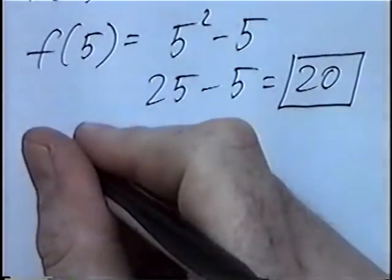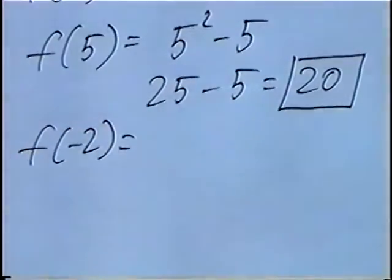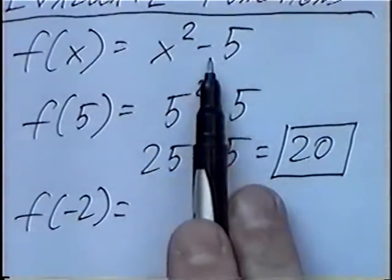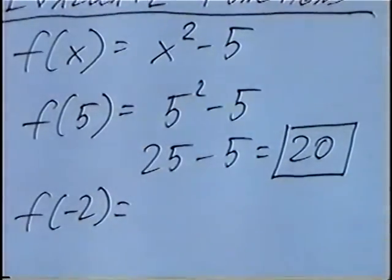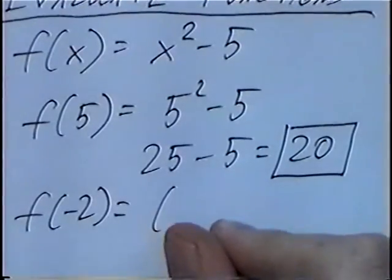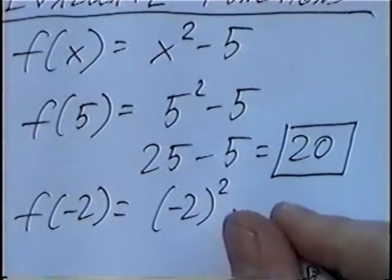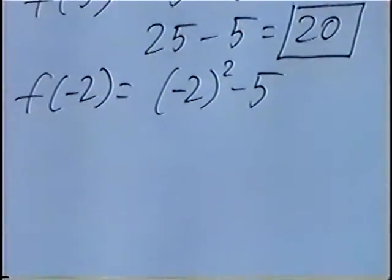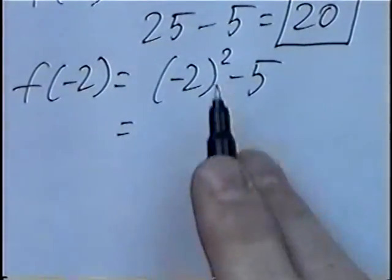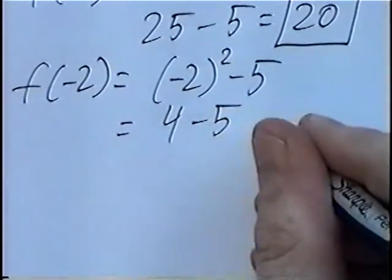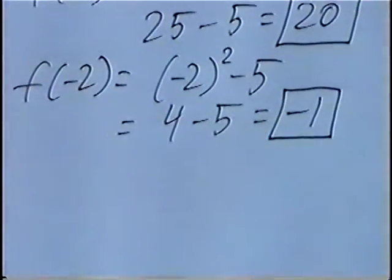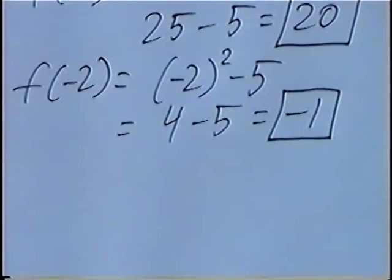The second question is f(negative 2). Using the same function x squared minus 5, we plug negative 2 in for x: negative 2 to the second power minus 5. Negative 2 squared is 4, and 4 minus 5 is negative 1. So f(negative 2) is equal to negative 1.